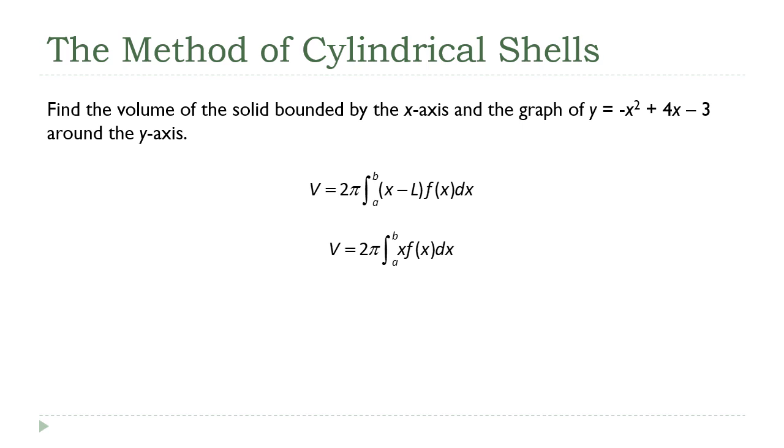Now, next, I need the limits of integration. To do those, I have to take that negative x squared plus 4x minus 3, set that equal to 0 and solve it. It factors nicely, so it's just a straightforward polynomial equation.